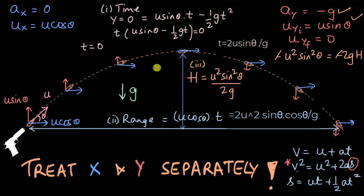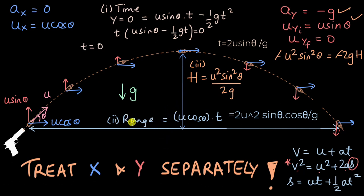To fully describe a projectile motion, all we need to know is the velocity u with which the object was fired and the angle theta. We can then determine the time, maximum height, and horizontal displacement (range). To find maximum height, we looked only at the vertical part; to find range, only the horizontal part; and to find time, again the vertical part of the motion.